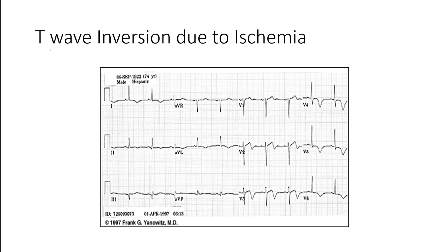In this example, we have inverted T-waves. Normally your QRS complex should be in the same direction as your T-wave — here they're not. We see that in V3 as well — they're inverted. In AVL, they're inverted too. Even in AVR, where everything is flipped (P and QRS), your T-waves are on the positive side of the deflection — that's not normal. So that's an example of an inverted T-wave, which is a sign of myocardial ischemia.